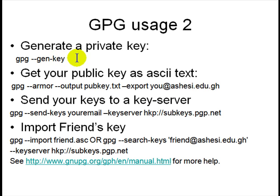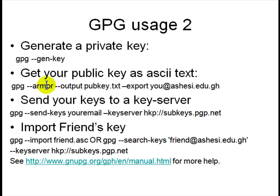First thing you do is generate a key pair. Then you can export your key pair — this is your email ID that you put in. You export it in text format, and 'armor' means ASCII text format for the public key. Then you can send your public key to a key server. This is a key server URL — protocol and URL.